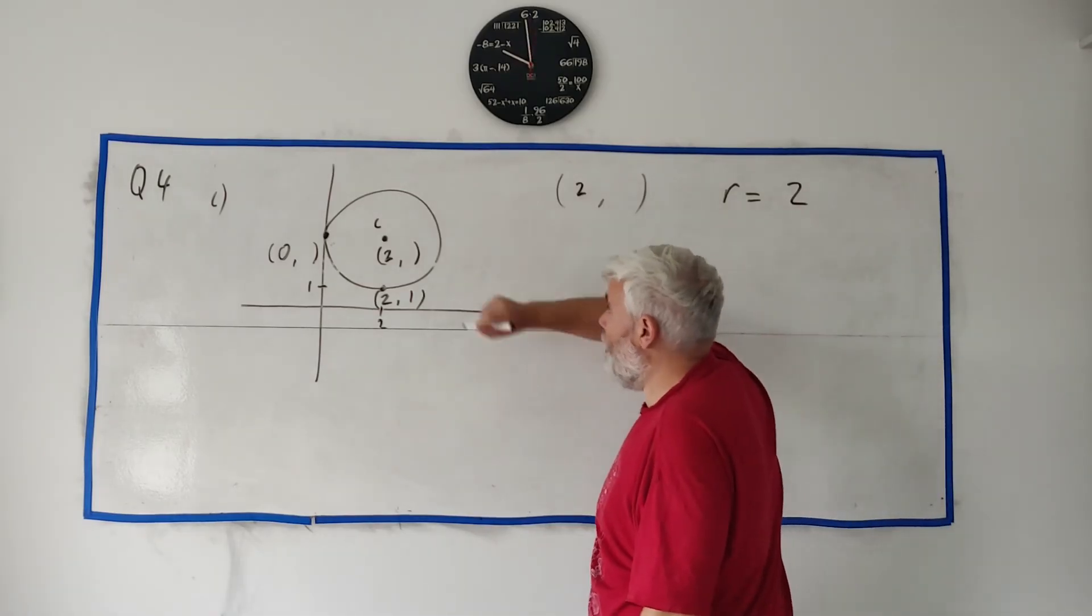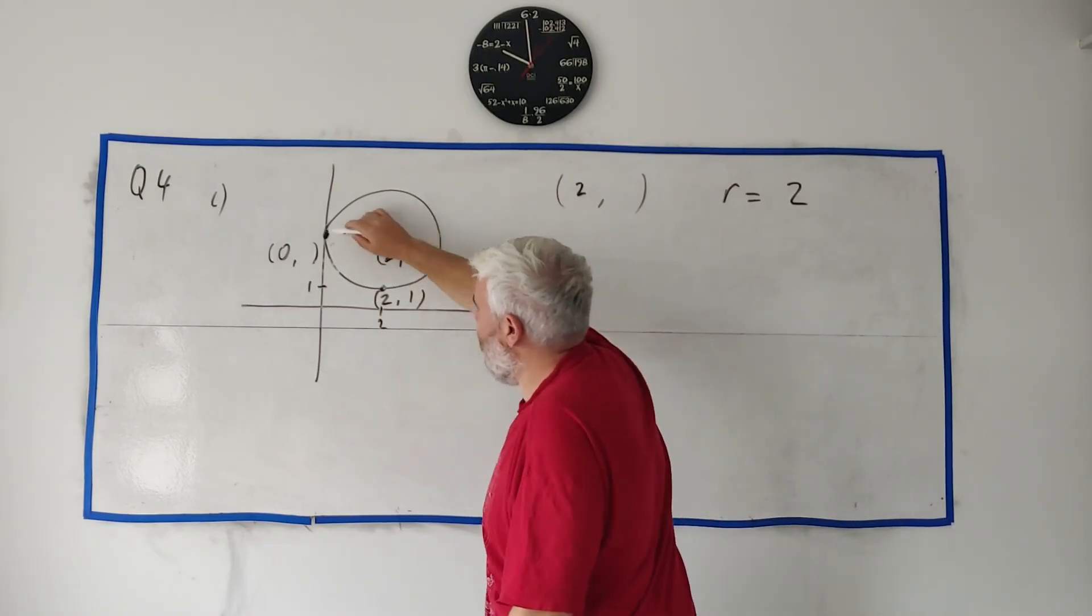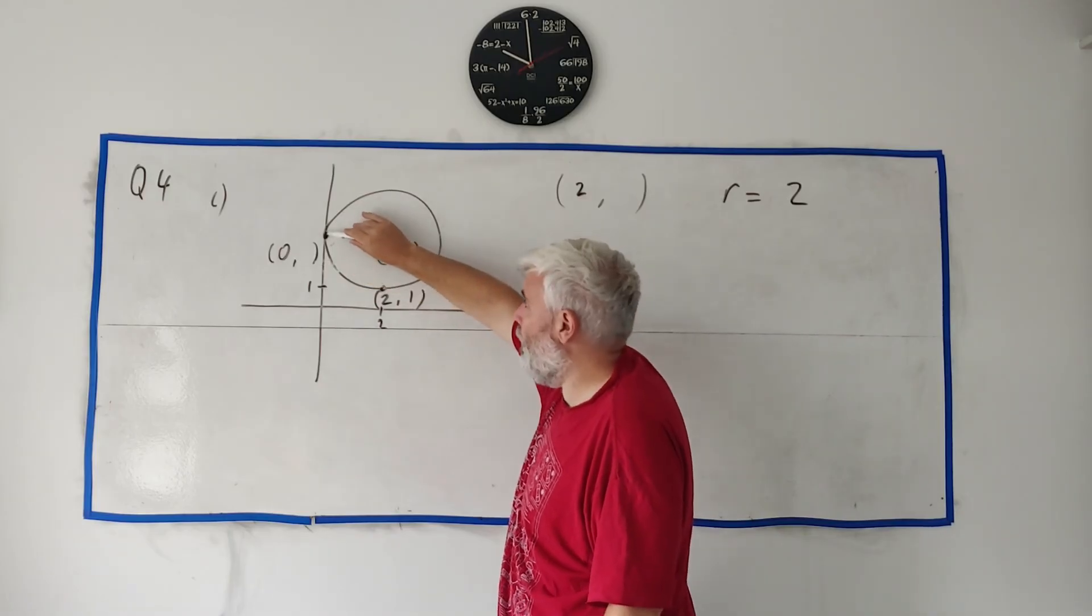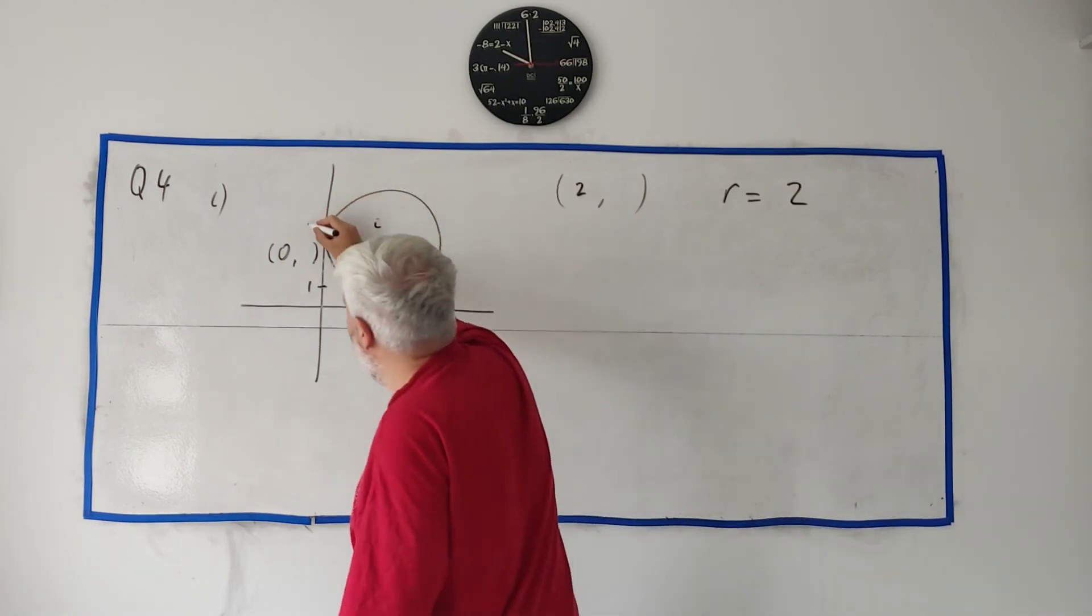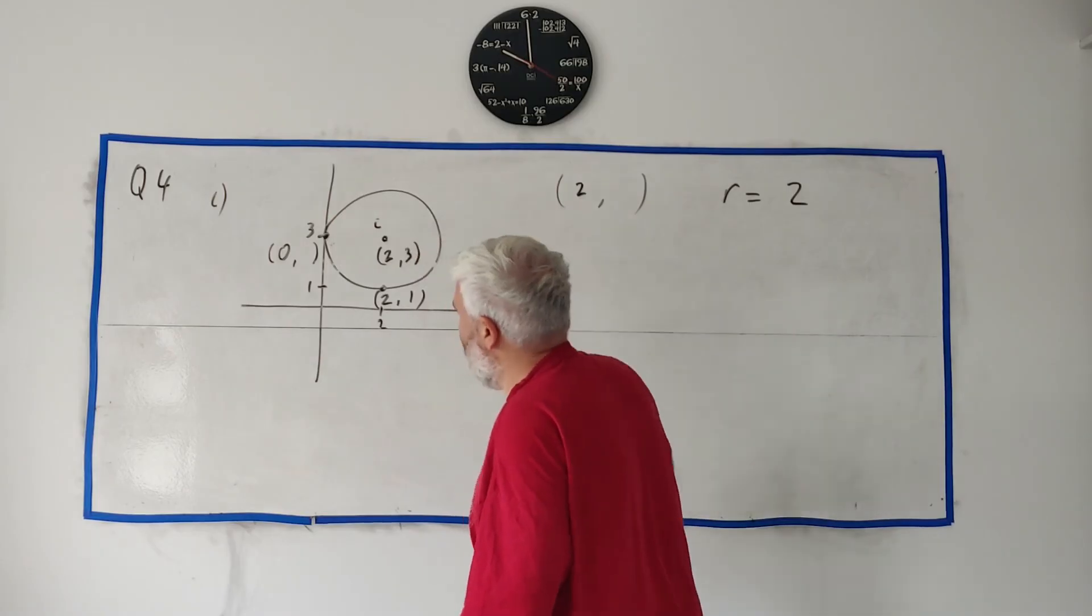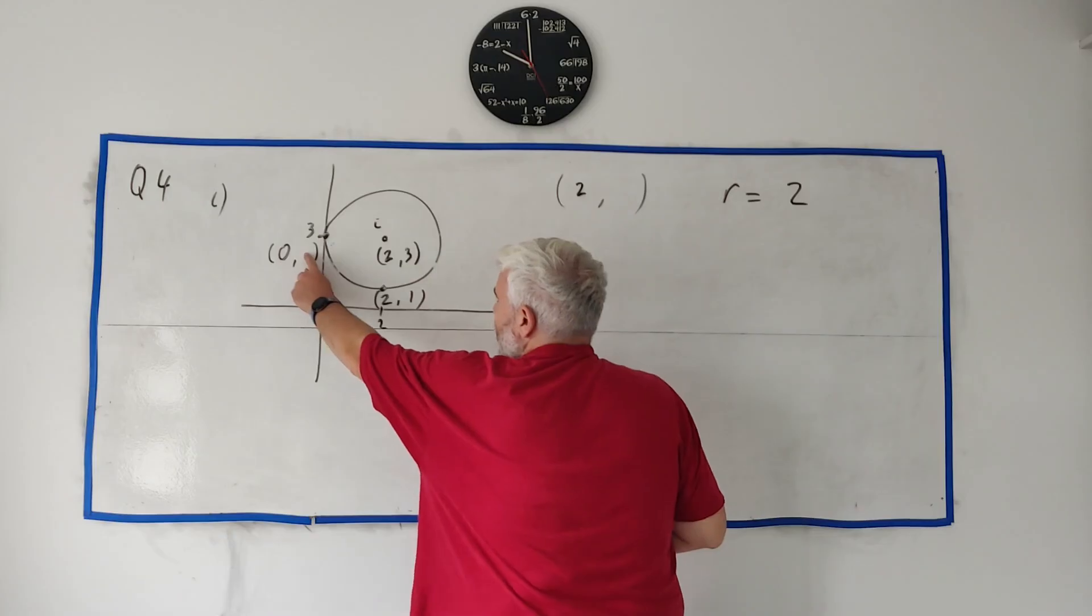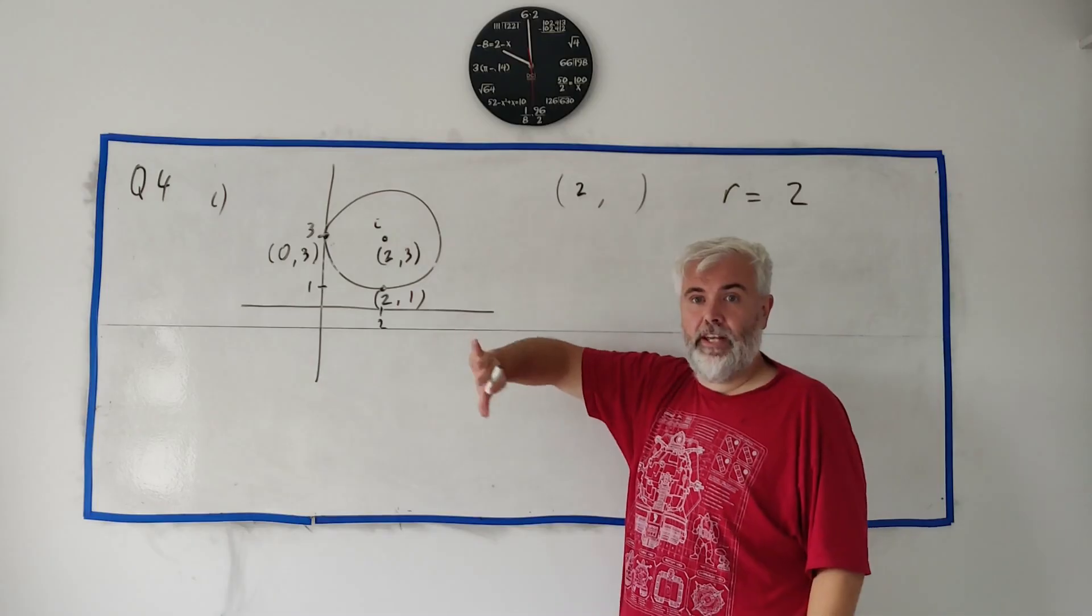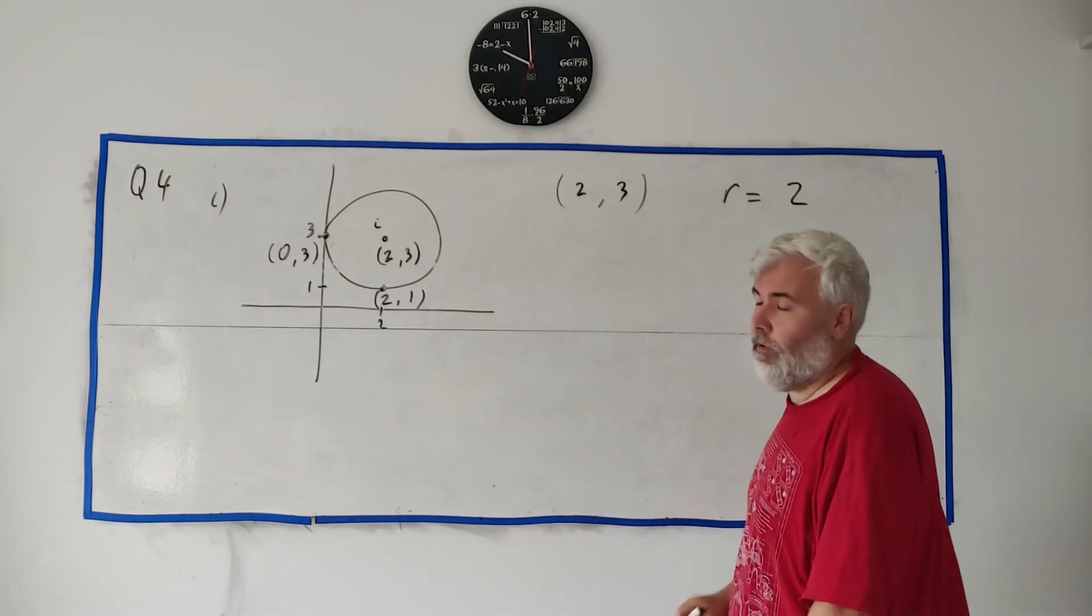Now if the radius is 2, that means we also know that this is 2. So we know the distance from here to here. That means we know the distance from here to here. It's also 2. So what number must be here on the Y axis? It's 2 away from 1. It must be a 3 on the Y axis. So this number here must be a 3. And then is that everything? We're still missing this guy. Oh, well, he's at 3 as well. So we can get all the points of that just from that little mystery. We filled everything in here: (2, 3), radius of 2. That's the answer to part C.